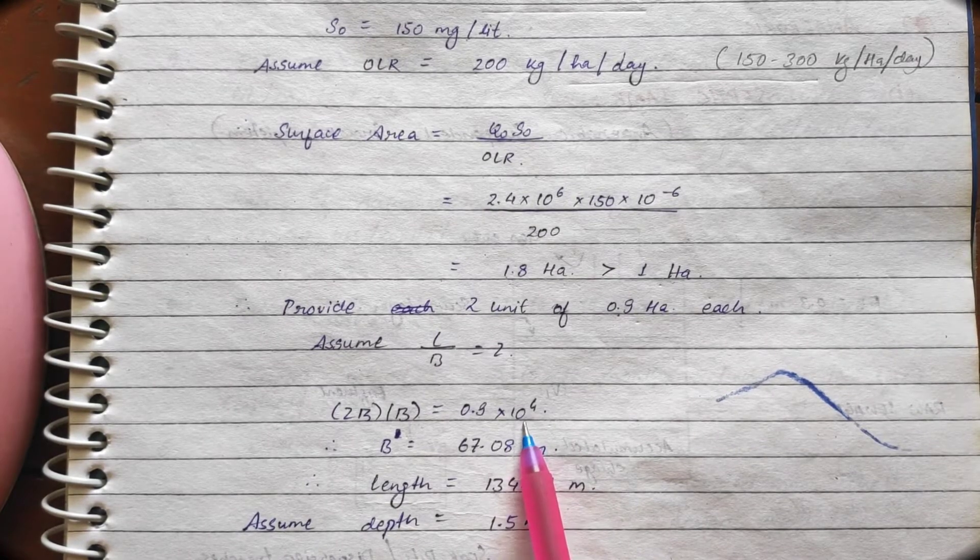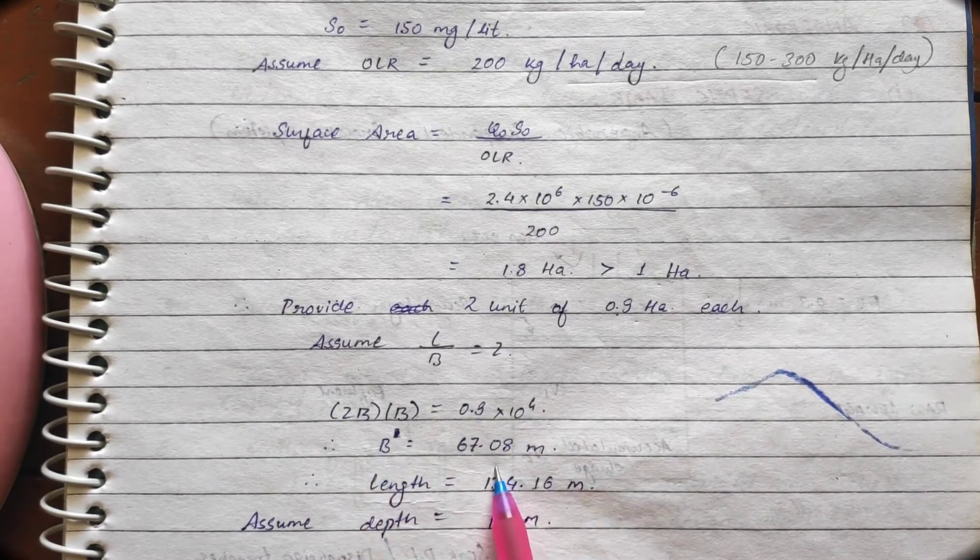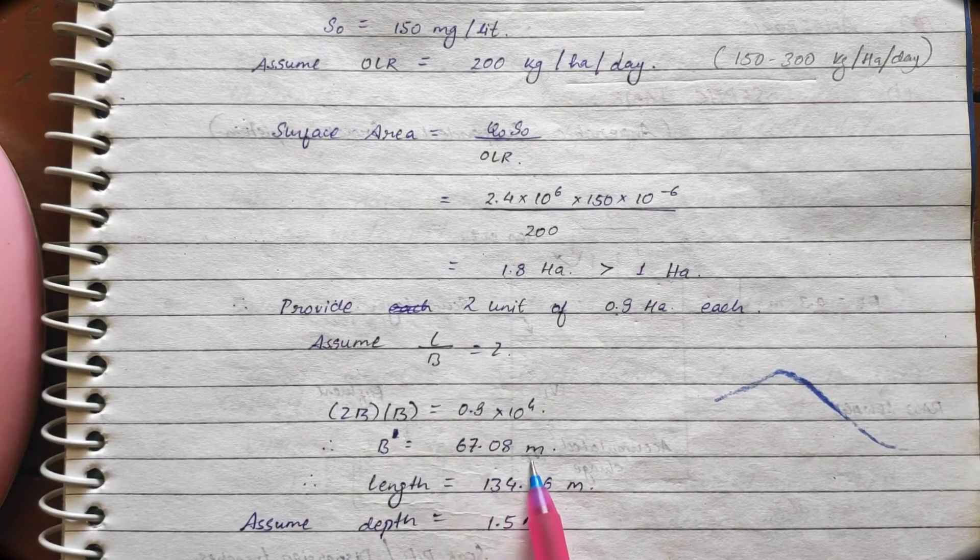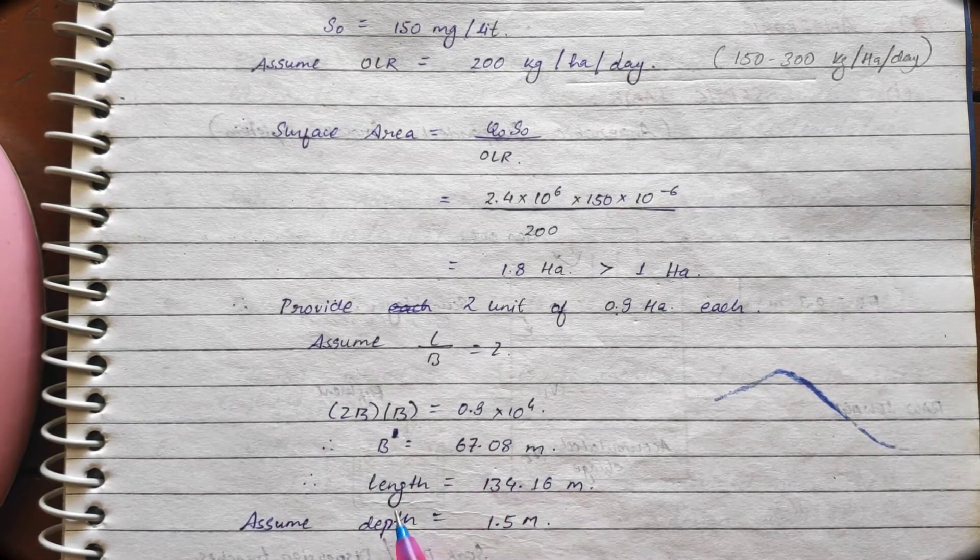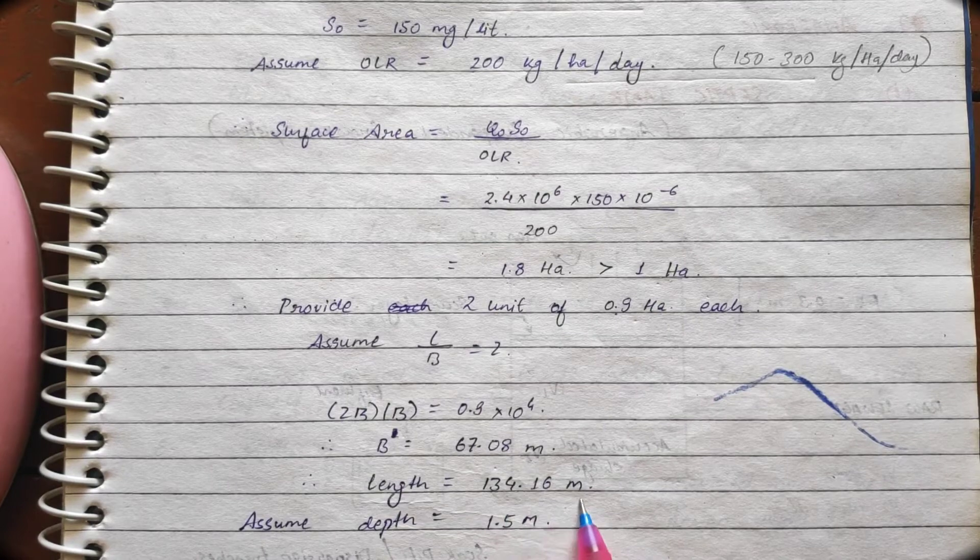1 hectare equals to 10 raised to power 4 meter square. So, we multiplied with 10 raised to power 4. From here we can get the width. Width comes out to be 67.08 meter. Length 134.16 meter.